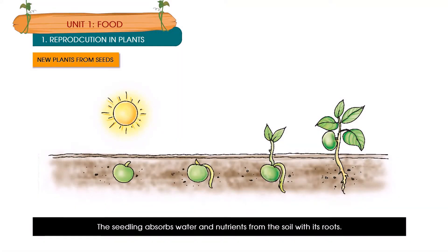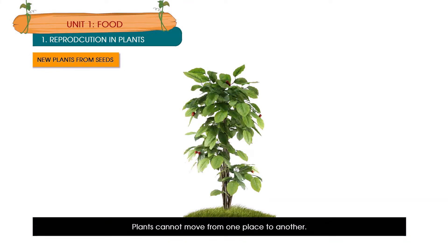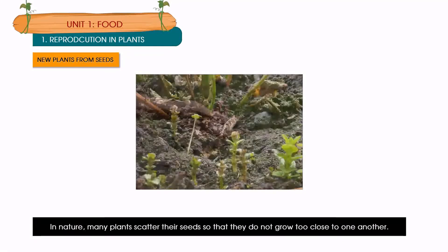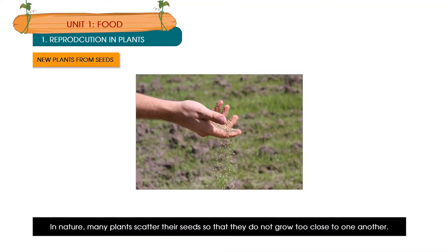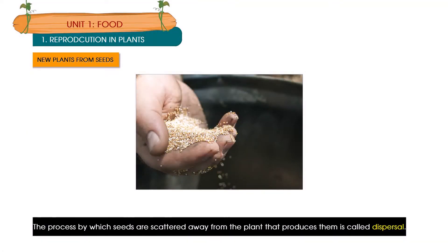The seedling absorbs water and nutrients from the soil with its roots, then develops leaves and grows into a plant. Air required for germination reaches a seed through pores in the soil — this is why soil is so important for a plant to grow. Plants cannot move from one place to another, but if all baby plants grow near the mother plant, they cannot all survive as they cannot get enough sunlight, food, water and space. In nature, many plants scatter their seeds so that they do not grow too close to one another. The process by which seeds are scattered away from the plant that produces them is called dispersal.